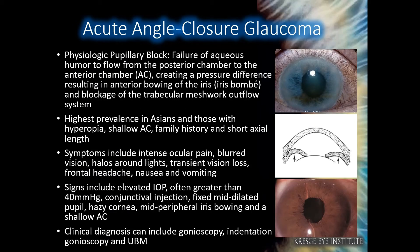Acute angle-closure glaucoma may lead to an optic neuropathy and is an important cause of acute vision loss, commonly due to pupillary block, resulting in the failure of aqueous humor to flow from the posterior to the anterior chamber. This is most prevalent in Asians, those with hyperopia, shallow anterior chambers, family history, or short axial length.